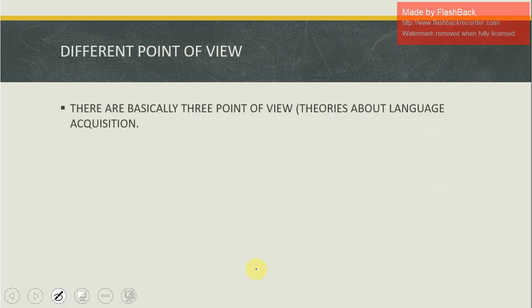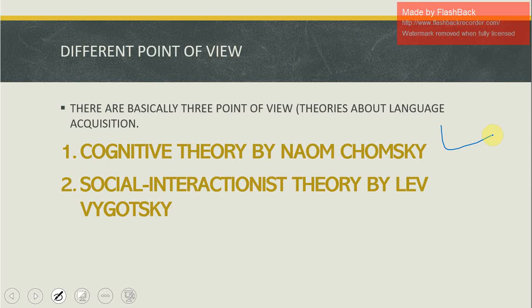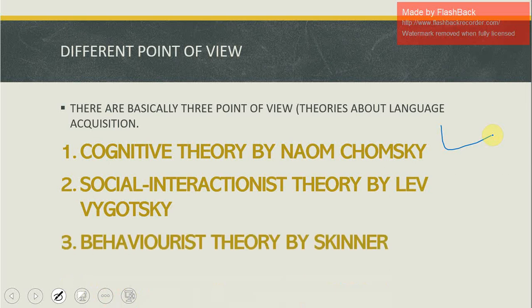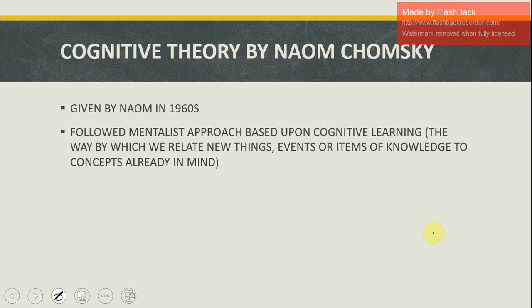There are basically three points of view about language acquisition: cognitive theory by Noam Chomsky, which we will discuss today; social interactionist theory by Lev Vygotsky; and behaviorist theory by Skinner. These two will be discussed in later videos. Cognitive theory was given by Noam Chomsky in the 1960s. If you're a student of linguistics, you'll know he was a great linguist, very famous for giving universal grammar and many other discoveries.